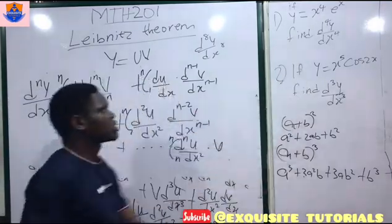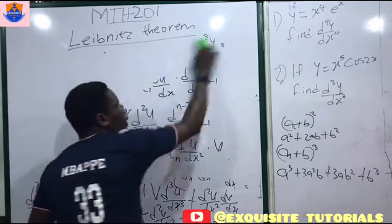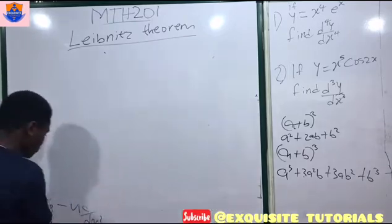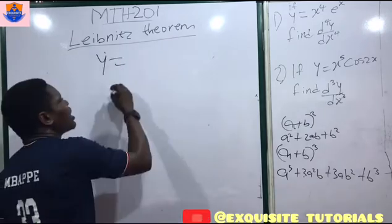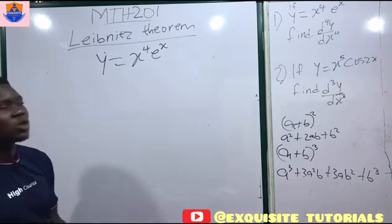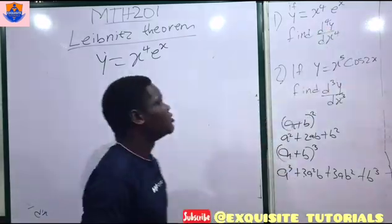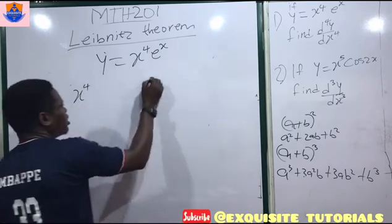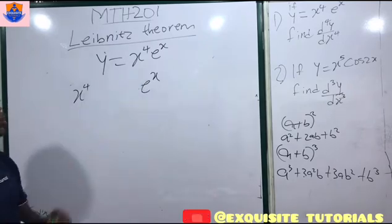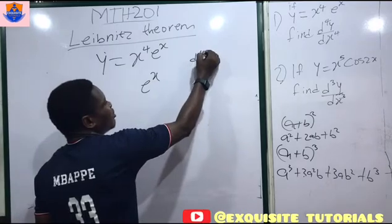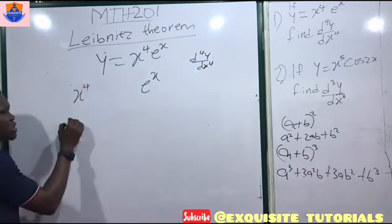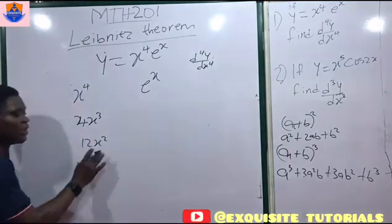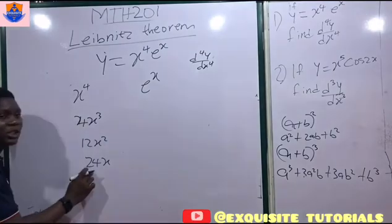With this example you should understand what Leibniz's theorem is about. Let's do Example 1: y = x⁴·eˣ, find the fourth derivative. Break it down — write u = x⁴ and v = eˣ. Now differentiate u four times: first derivative is 4x³, second is 12x², third is 24x, fourth is 24. Since v = eˣ, every derivative of v is eˣ.